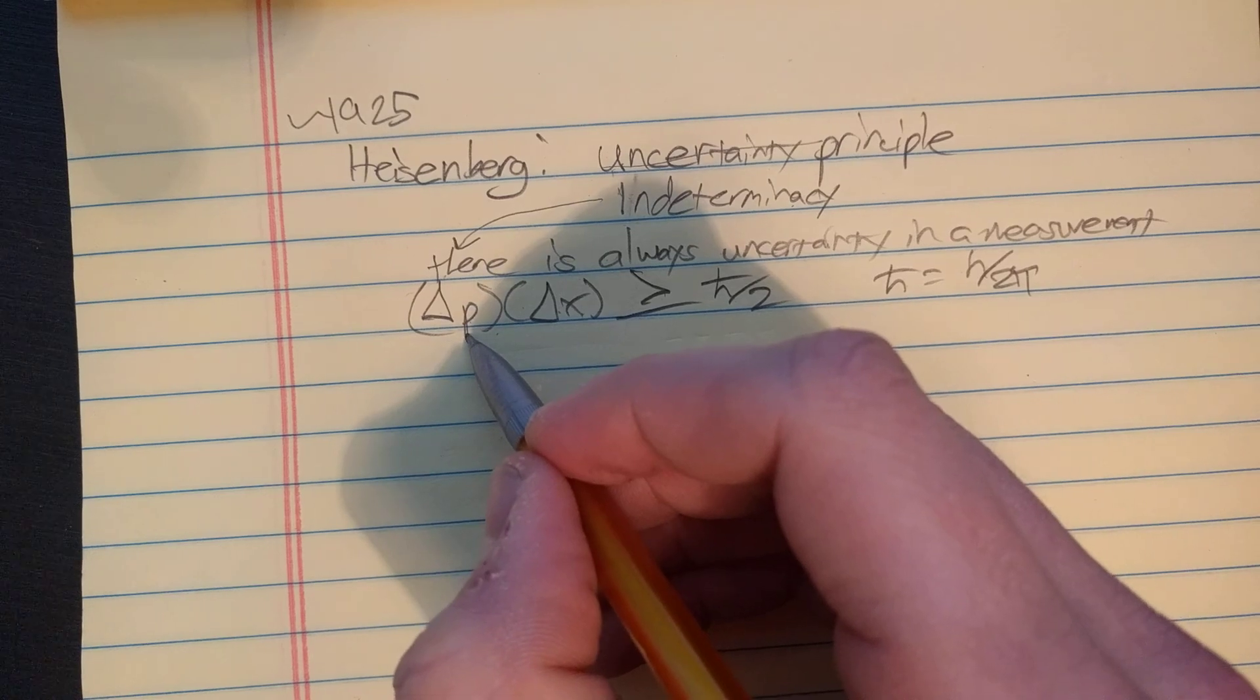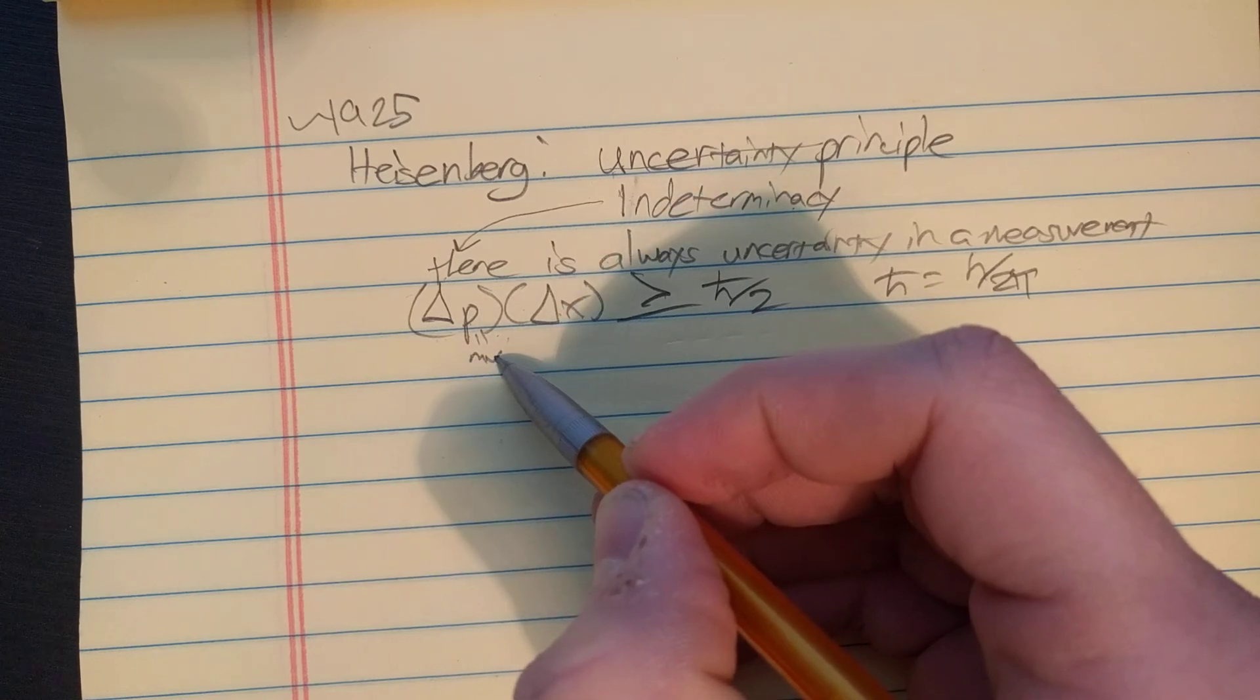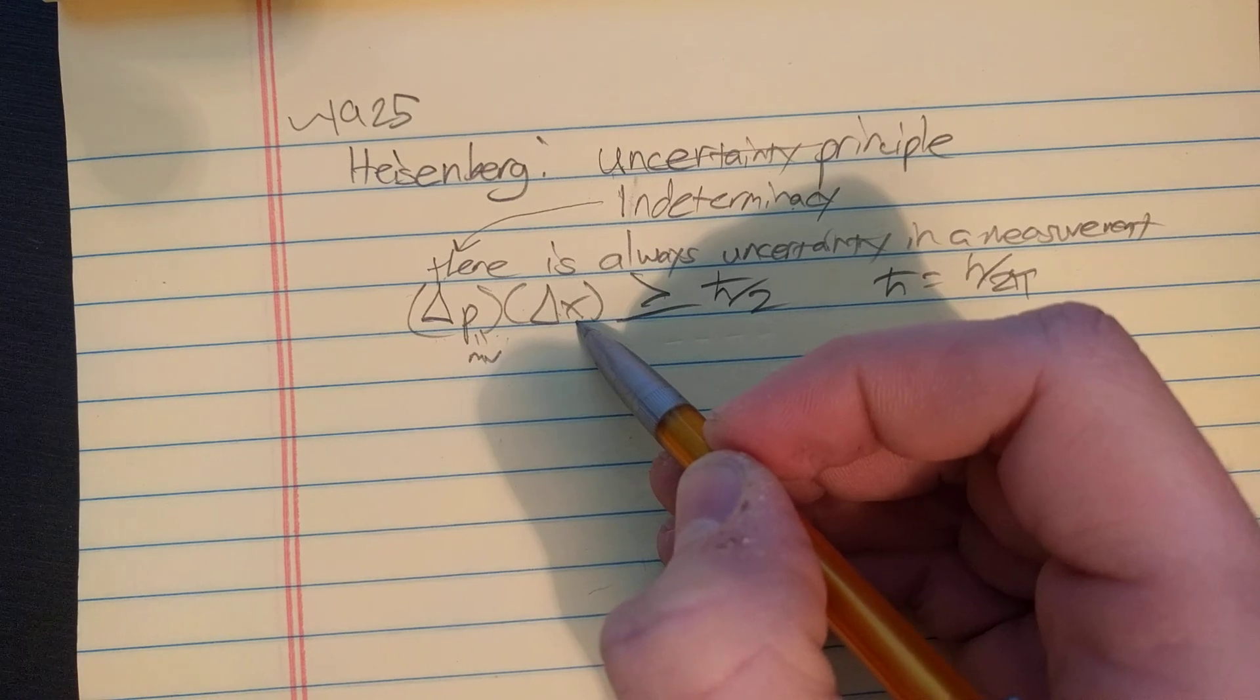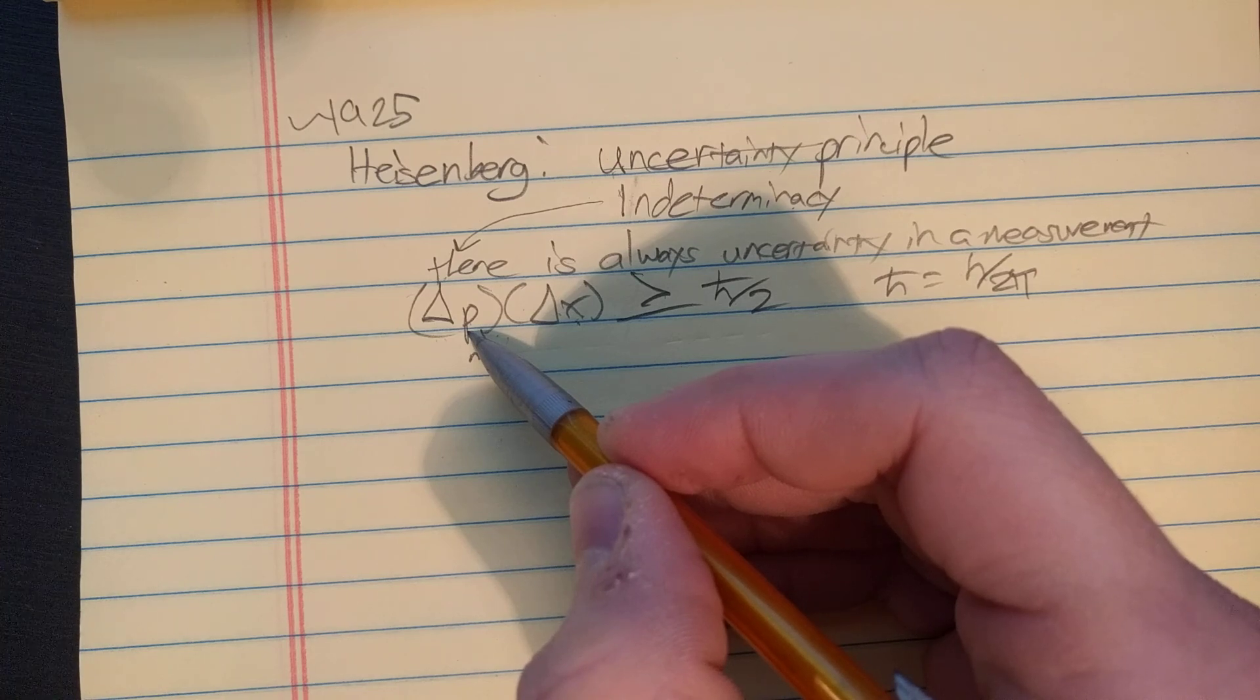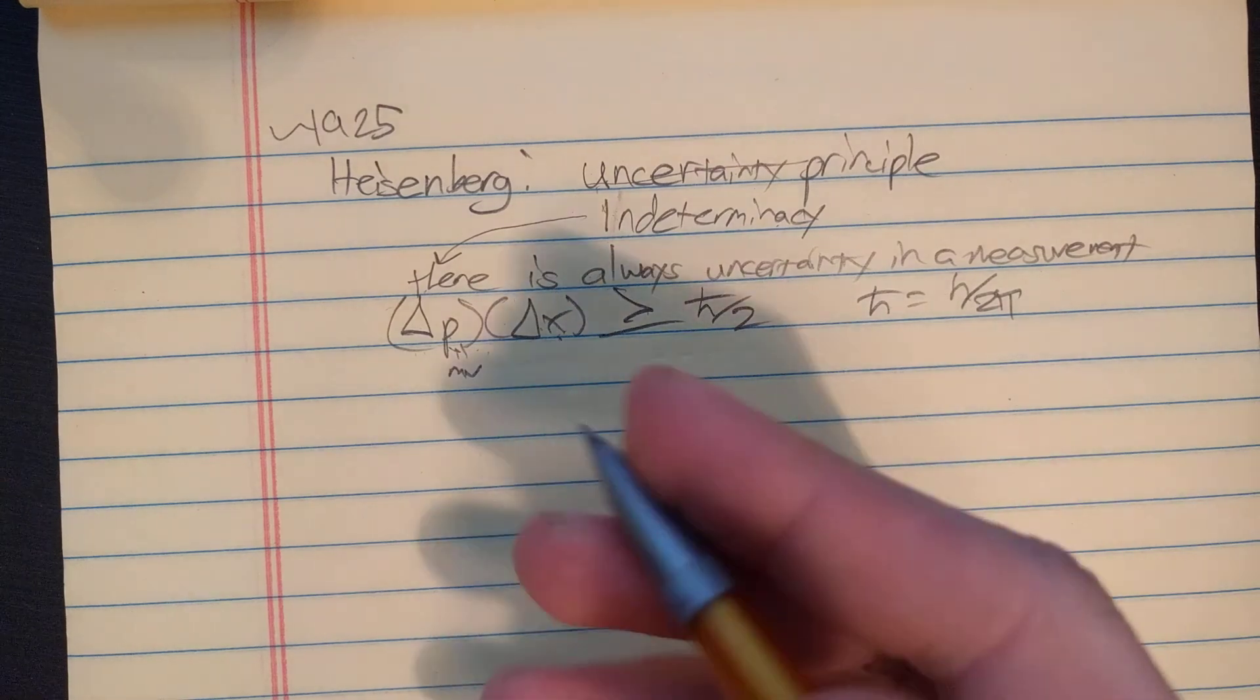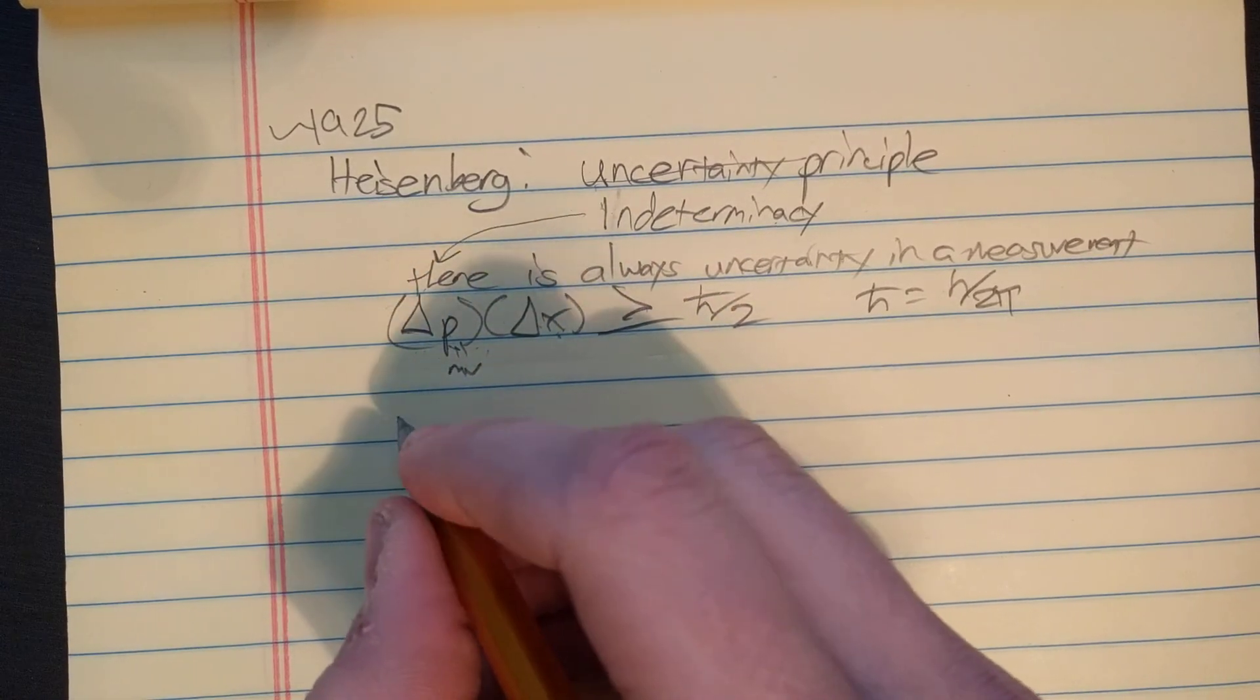This said, the momentum is just the mass times the velocity, right? So the more you know how fast something's moving, the less you know where that thing is. The more you know where that thing is, the less you know how fast that thing's moving. This blew everybody's mind. Still is blowing people's minds today.